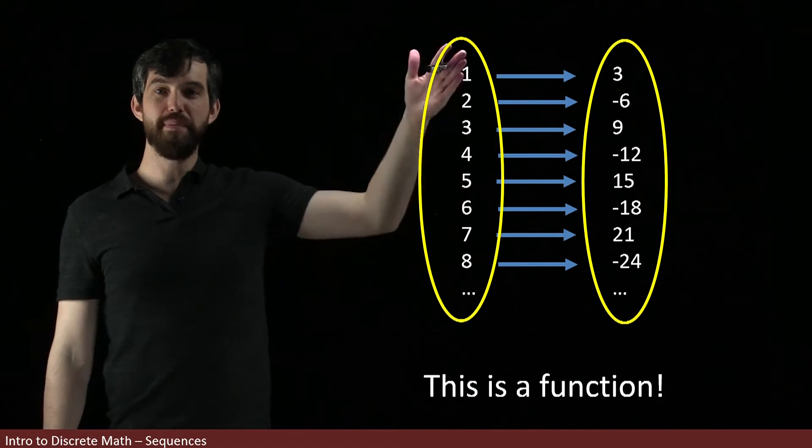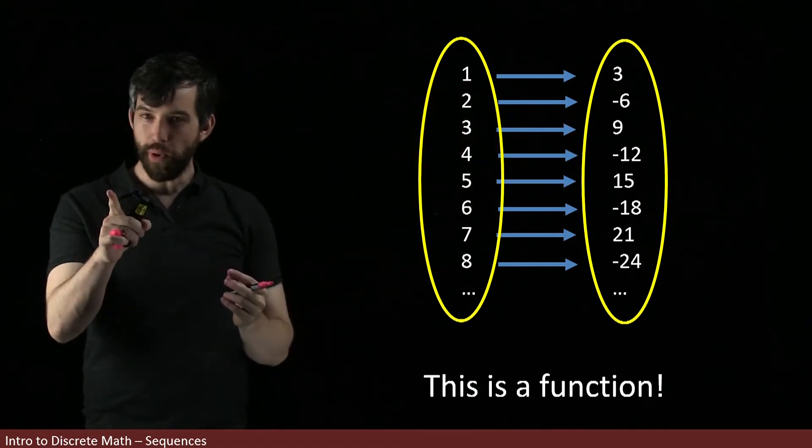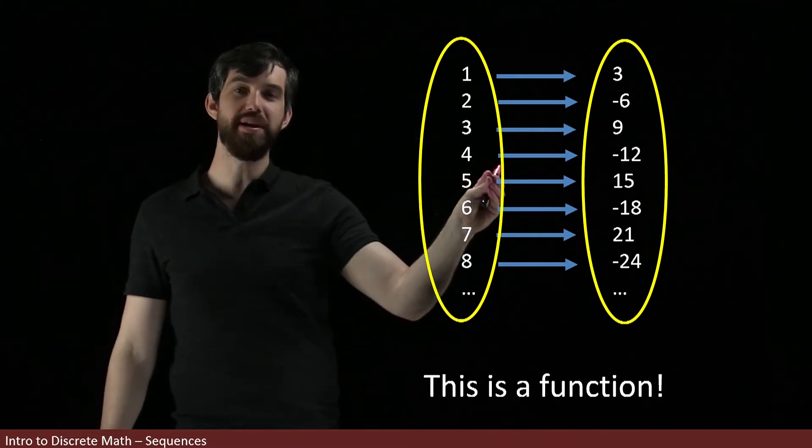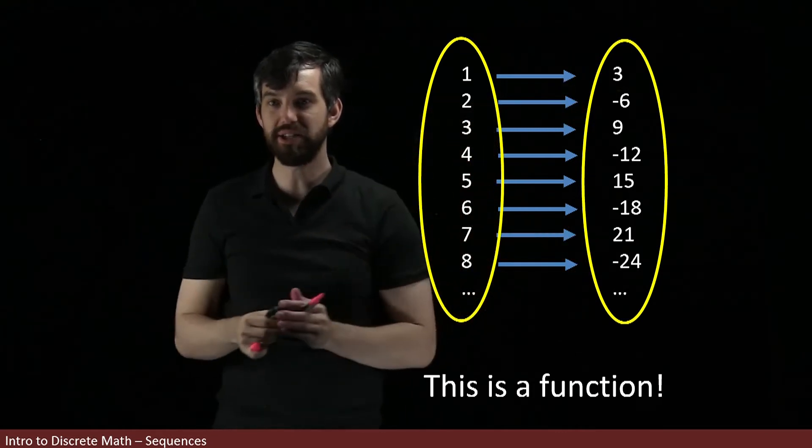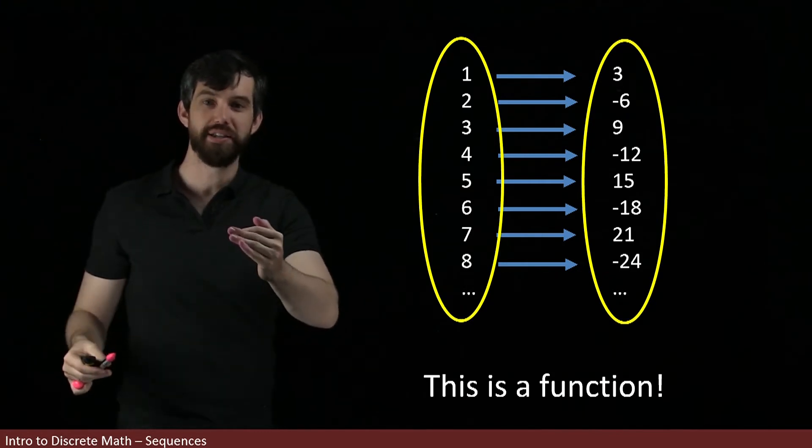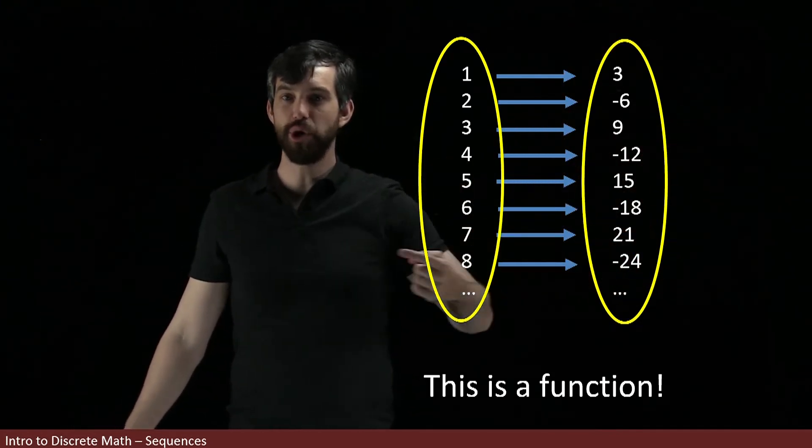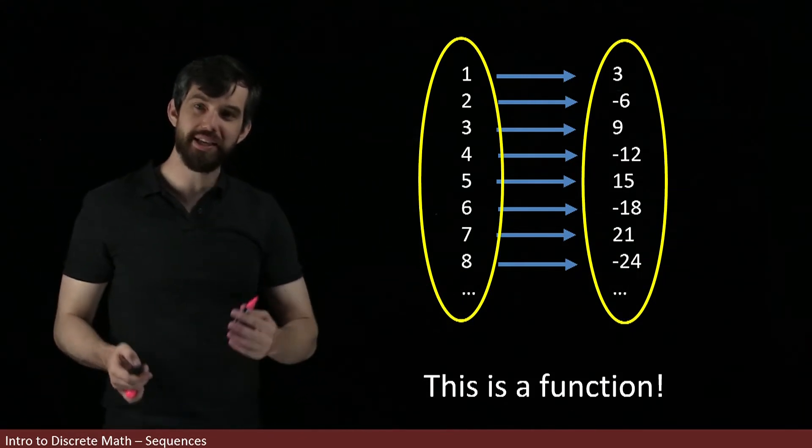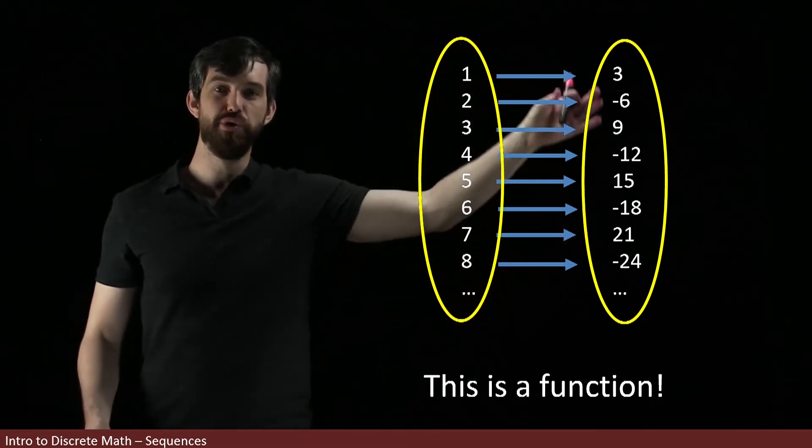Every single thing in my domain goes somewhere, and more importantly, it obeys the vertical line test. There's no element in my domain here that splits into multiple different things, because my association is to take one element, say the kth one, to the kth one over here, not two different ones. So really what a sequence is going to be then is this function from this particular set to some other set.